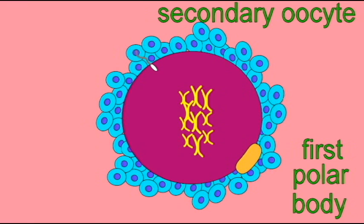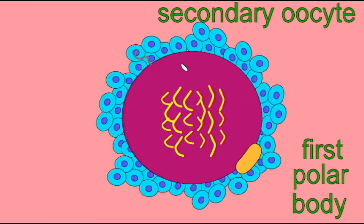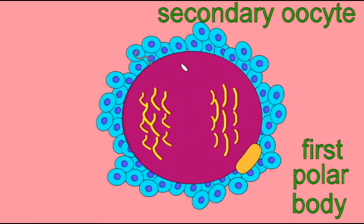This cell division is not an equal cell division, and so one set of chromosomes will be pulled aside and form a small cell known as a polar body. The first polar body, the one which had been produced during the first meiotic division, may also divide at this time.